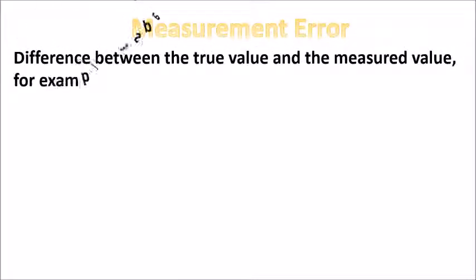Measurement error is the difference between the true value and the measured value, for example, a specific value.